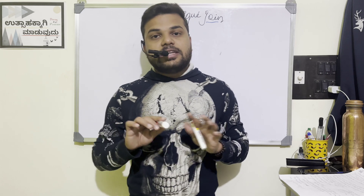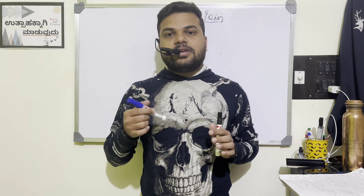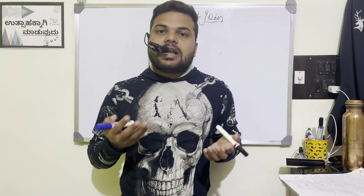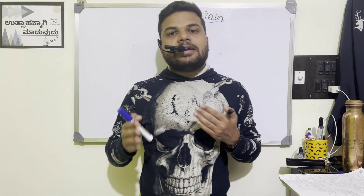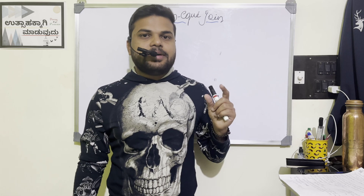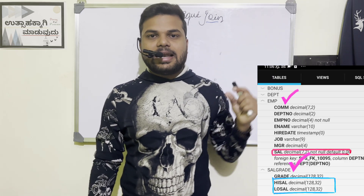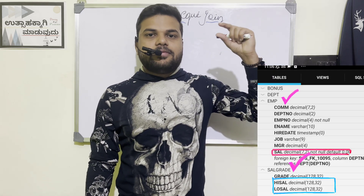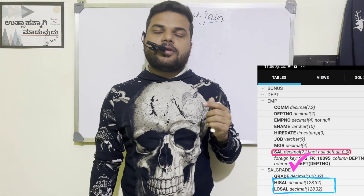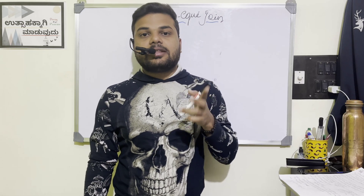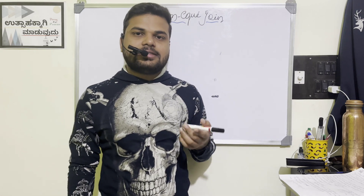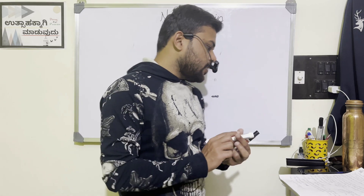The question is: when do we go for non-equijoin? Whenever there is no common column between the tables. If there is no common column, at least a relevant column should be there — the column name can be different, but the data type and sizing should be similar. For example, in our database we have an employee table and a salary table. The employee table has a column 'salary', and the salary table has columns 'low_sal' and 'high_sal'. These are the two relevant columns. I will take one question so you understand how to write a non-equijoin query.